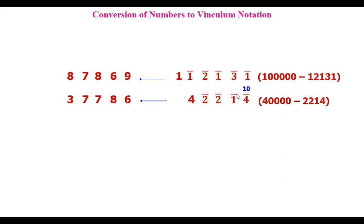To convert from vinculum back to decimal: take the last 10, then 9, 9, 9 for the negative numbers — the positive number is not necessary. 10 minus 4 is 6; 9 minus 1 is 8; 9 minus 2 is 7; 9 minus 2 is 7; and 4 minus 1 is 3. That's how we get the decimal number back.